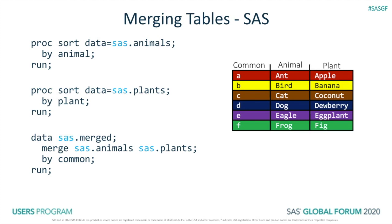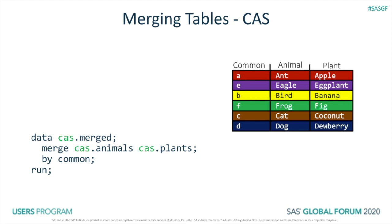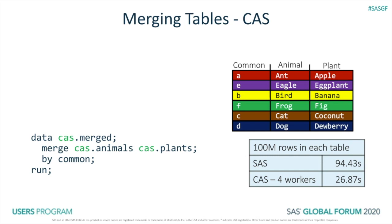Now let's change the libref like we did in the prior two sections to automatically have data step run this program in CAS. In CAS, we don't need the sorting, as the presence of the by statement tells CAS to automatically group the rows. And here's our result. This was simple — we used the same data step, changed the libref to get it to run in CAS, and we get the same answers. Note that the row order is different because of the way all of the machines are sending their rows back to SAS at the same time. If we needed to order this, we would need to do some sorting in SAS. When we merged two tables of 100 million rows, SAS took about 94 seconds and CAS took about 27 seconds. So this was simple and it was fast.